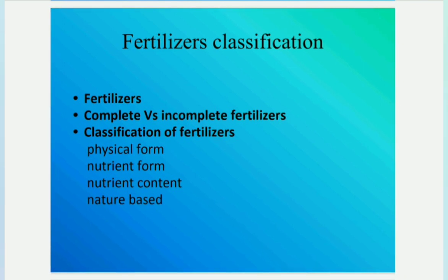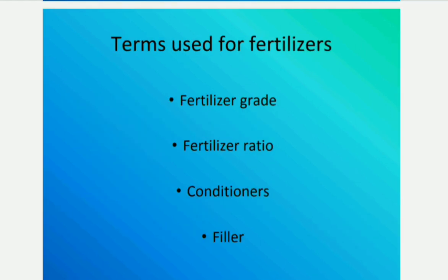Before going to classification, first we know what is a complete fertilizer and an incomplete fertilizer. A complete fertilizer contains all three primary nutrients, and an incomplete fertilizer lacks any one of the primary nutrients. Fertilizers are classified into four different types: physical form, nutrient form, nutrient content form, and based on nature.